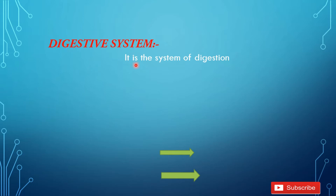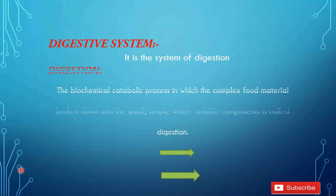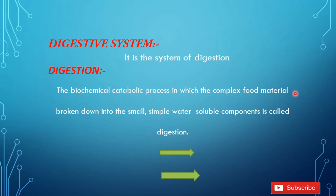How can you define the digestive system? It is a system of digestion. What is digestion? Digestion is the biochemical catabolic process in which complex food material is broken down into small, simple, water-soluble components. That is called digestion.